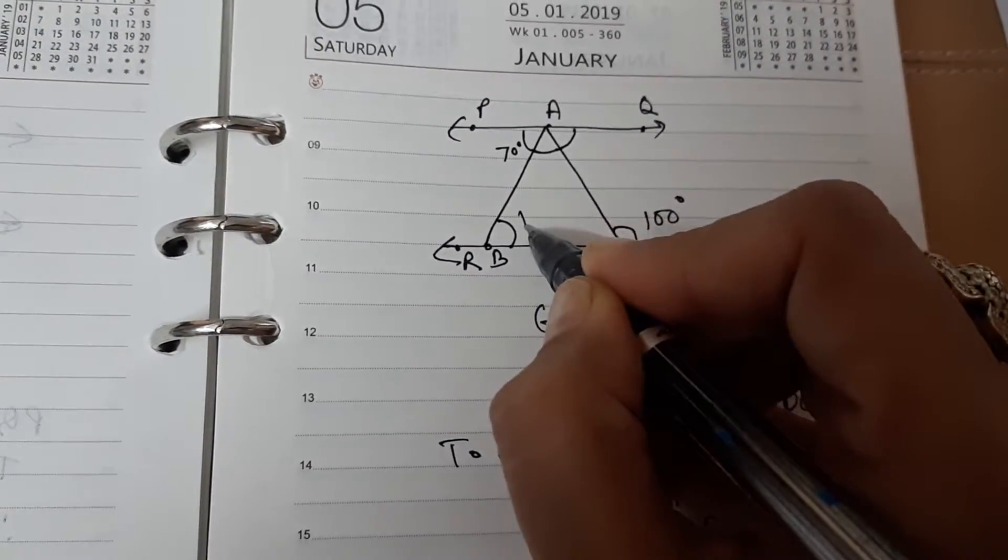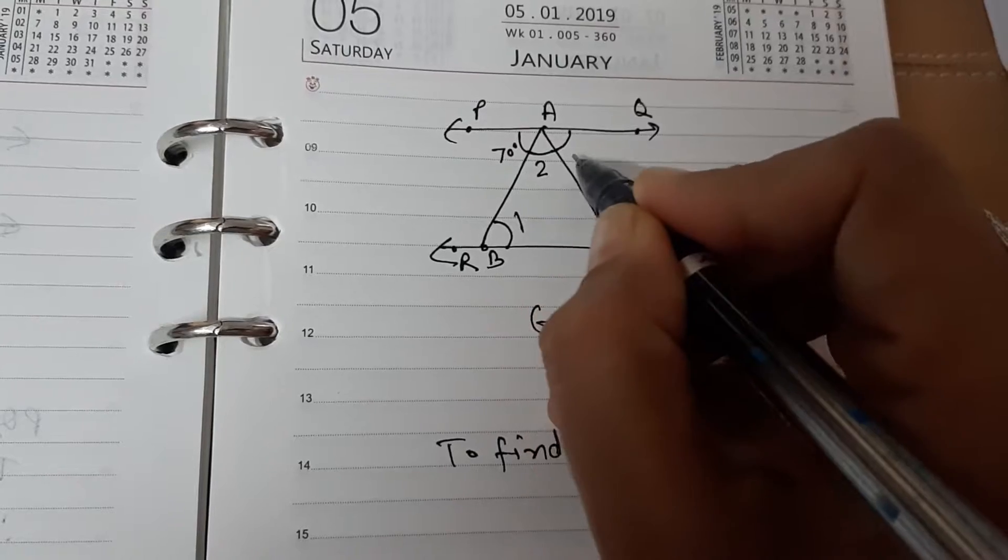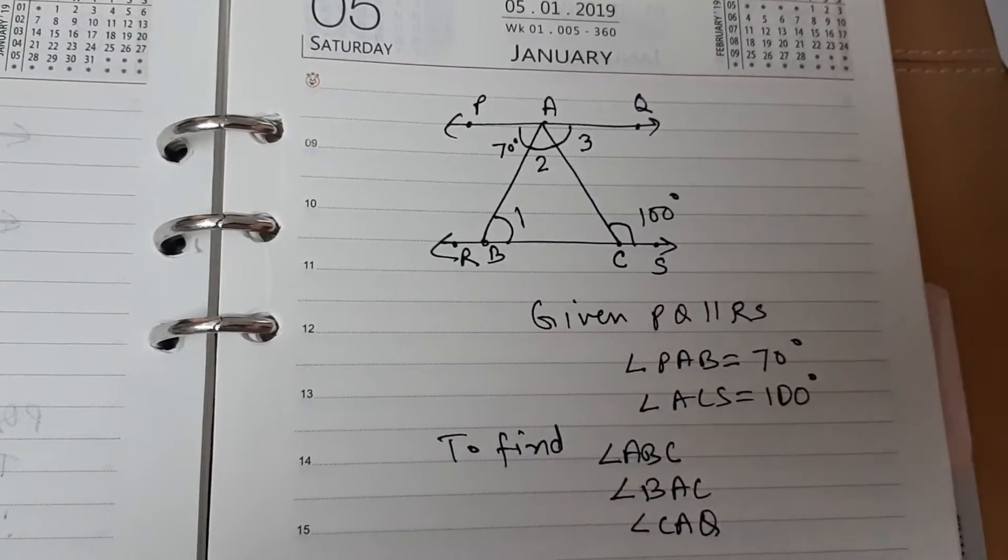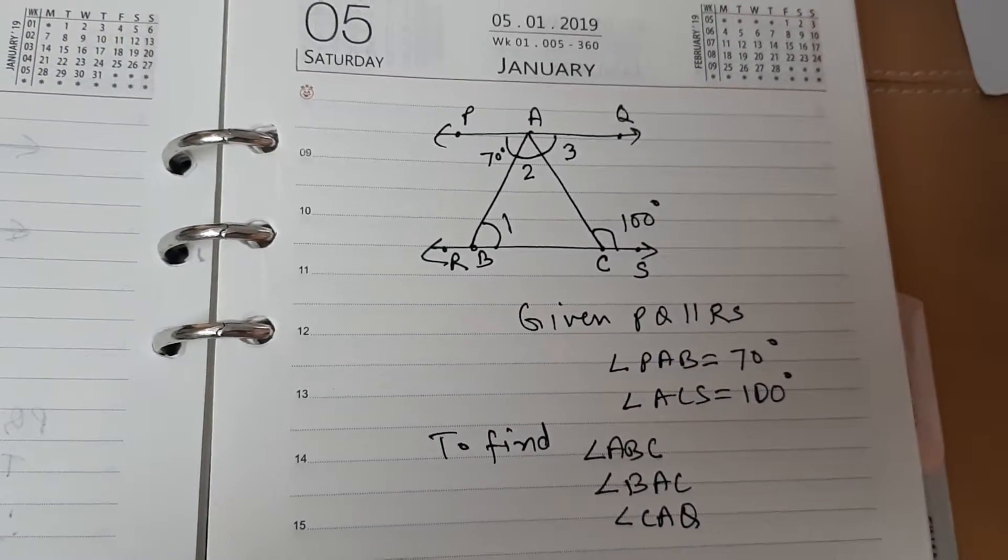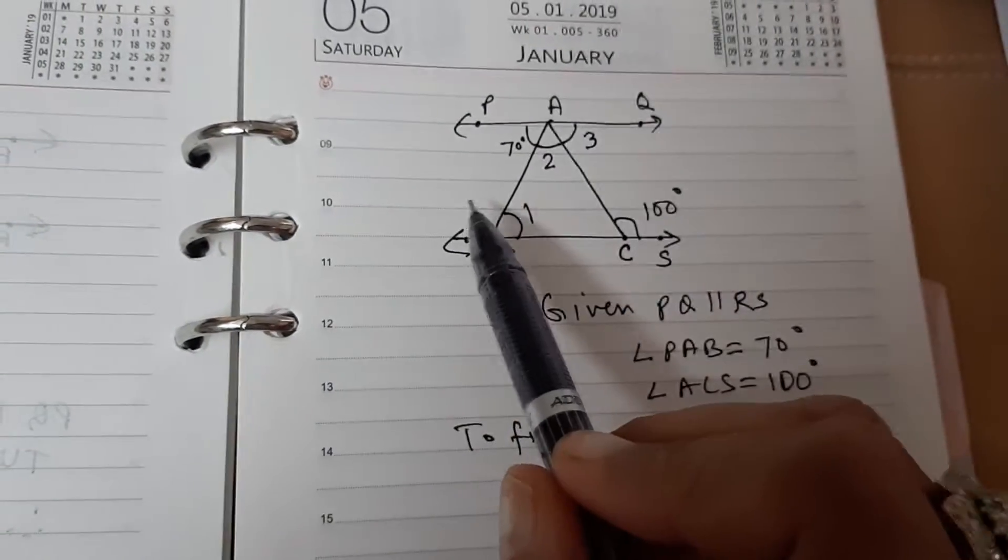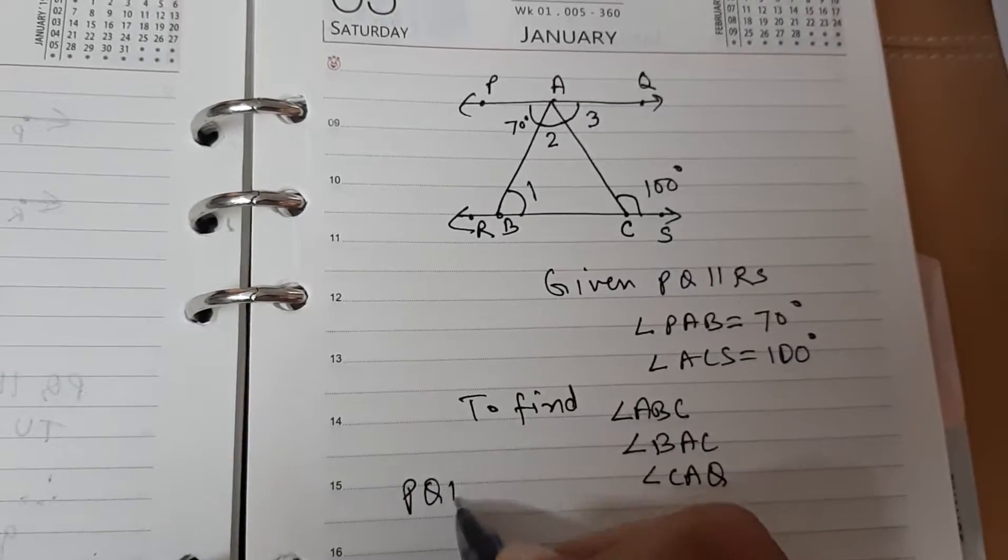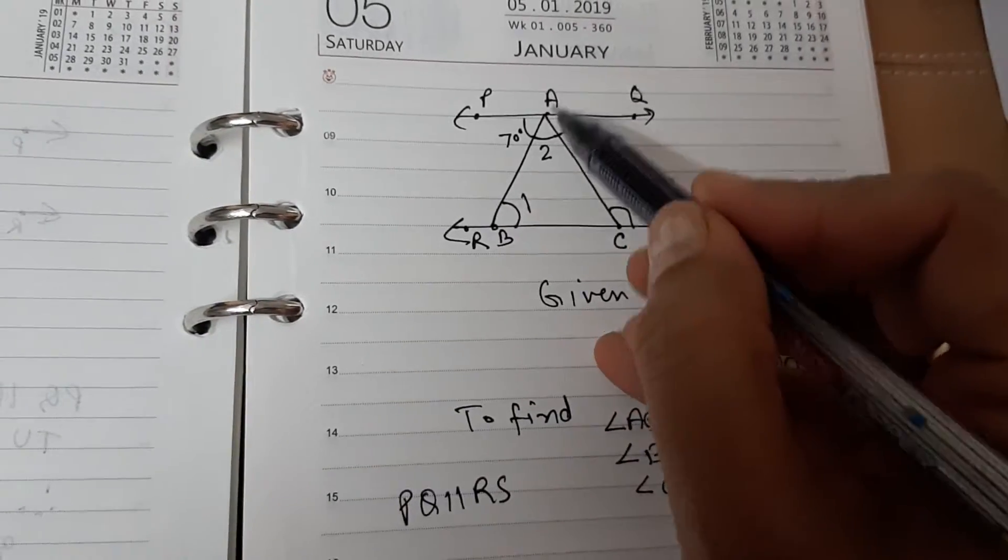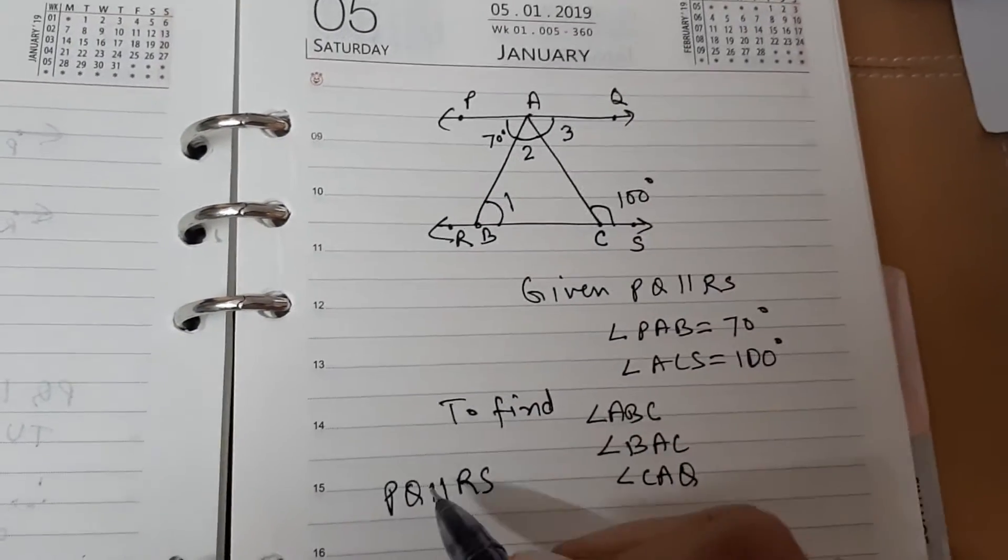Let me mark these angles as angle 1, angle 2, and angle 3. Observe carefully, PQ is parallel to RS and AB is transversal.